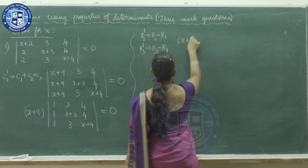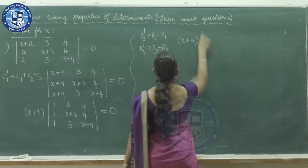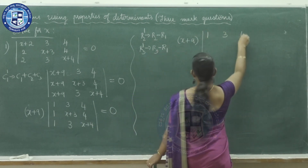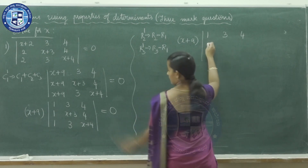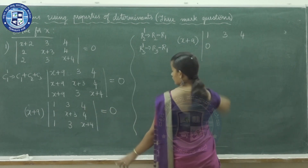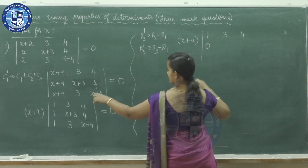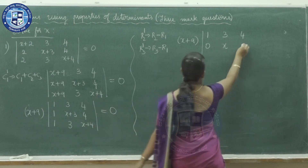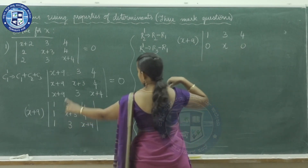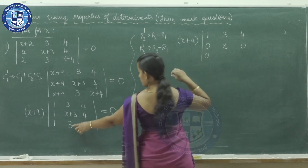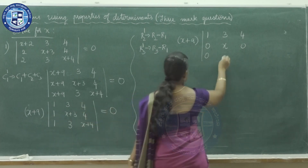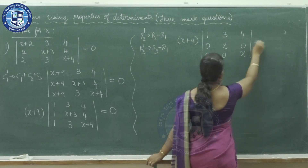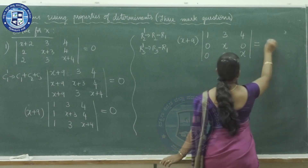With x+9 already factored outside, keep the first row as is. For the second row: 1−1=0, x+3−3=x, 4−4=0. For the third row: 1−1=0, 3−3=0, x+4−4=x. So we get the determinant: 1, 3, 4; 0, x, 0; 0, 0, x, equals 0.